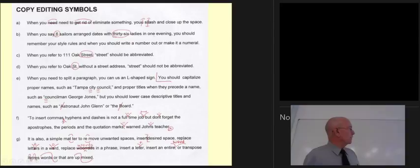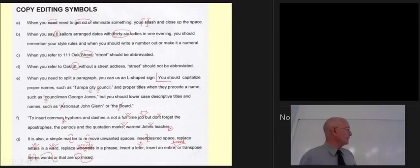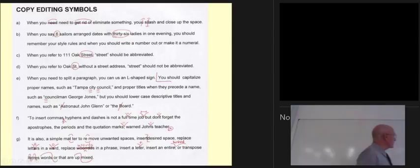Over here I want to split this into two paragraphs, so this is a paragraph mark. Here I want to capitalize the C in 'city' and C in 'council' — three lines under a letter mean capitalize it. Same with 'councilman' — it comes before his name, so it should be capitalized. Be careful: these look very much like the slash-and-close mark. A diagonal slash means lowercase it — 'astronaut' is not a formal title, it's descriptive like 'farmer,' so it's not capitalized. The slash means lowercase it.